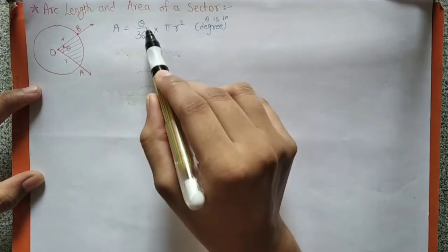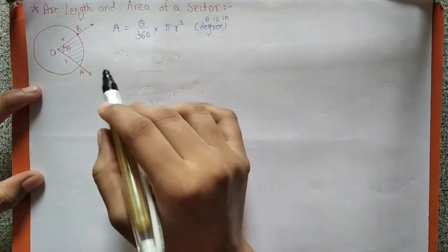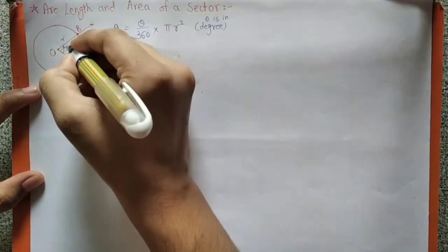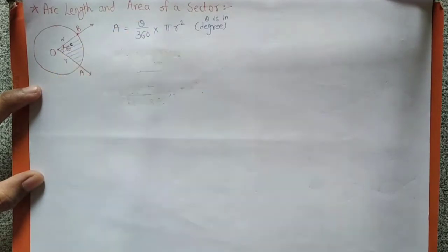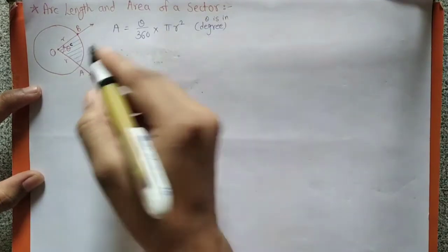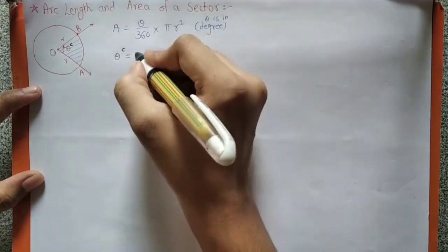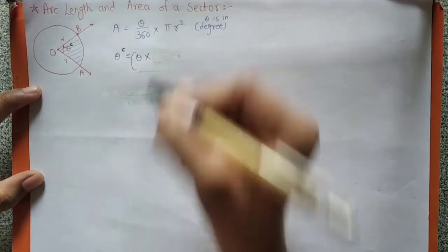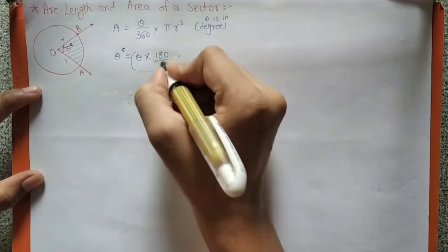जब हमें degree में theta मिलता था उससे हम area of sector निकालते थे। अभी अगर theta is in radian, तो हमें इसको degree में convert करना है। ये जो theta radian में दिया है, इसको degree में convert करने के लिए 180 upon pi से multiply करना पड़ेगा।